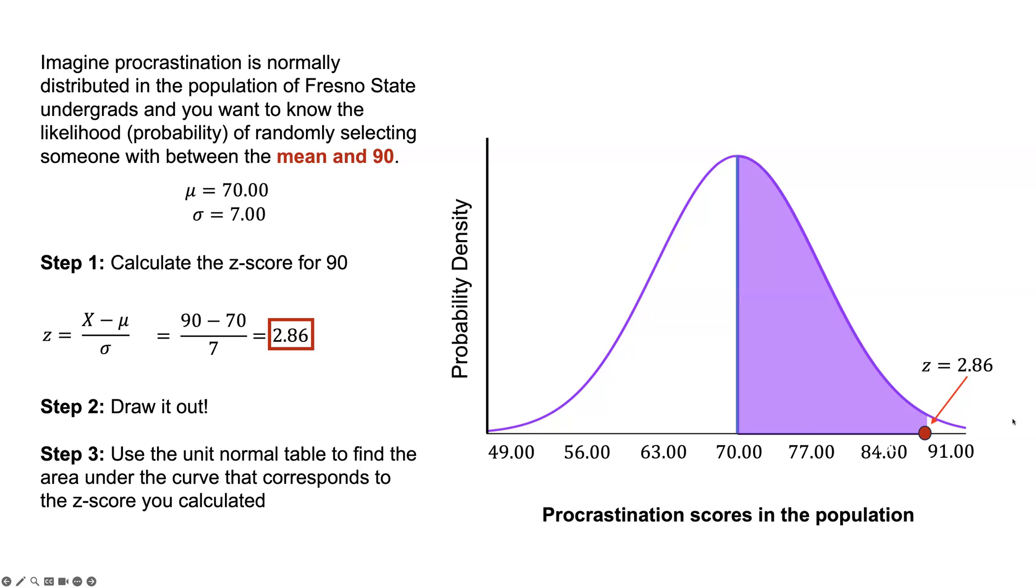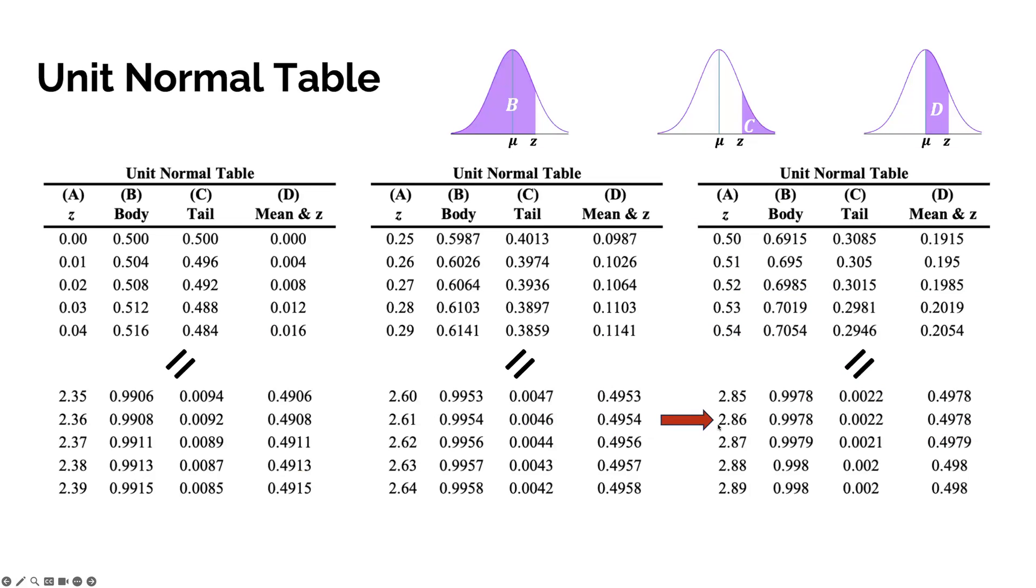We will use the unit normal table again, same place. We're going to look at 2.86. Here, we're looking at column D, mean to z, or mean and z. It's 0.4978, or 49.78%. You should note this 0.4978 is only 0.5 exactly less than the body. That's because we're taking out that half, that 0.5 of the distribution, when we look for just the mean to z.